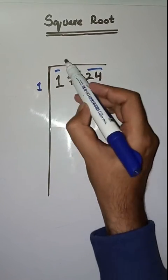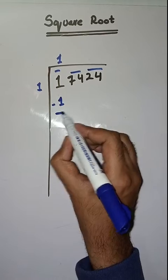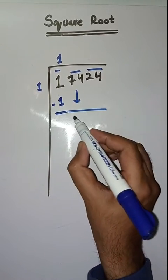So we take our number 1. One ones are one. Minus karenge, maripas aajega zero. Next pair is 74, isko niche lehenge.